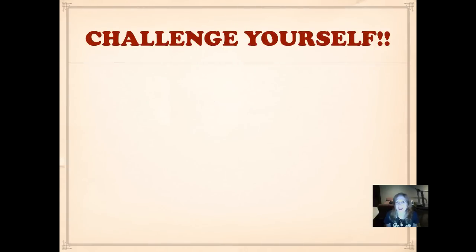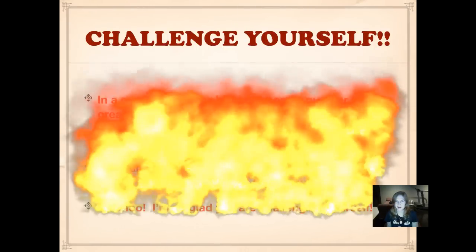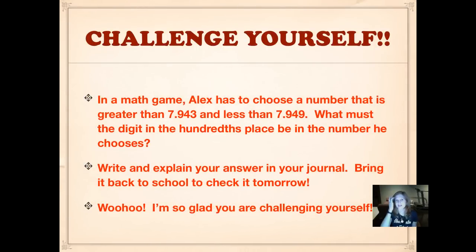Now it's time to challenge yourself. Here it comes. In a math game, Alex has to choose a number that is greater than seven and nine hundred forty-three thousandths and less than seven and nine hundred forty-nine thousandths. What must the digit in the hundredths place be in the number he chooses? Think about it. Write out your answer and explain it in your journal and then bring it back to school to check it tomorrow. I am so thrilled that you're challenging yourself. That is really exciting that you're enjoying your math.